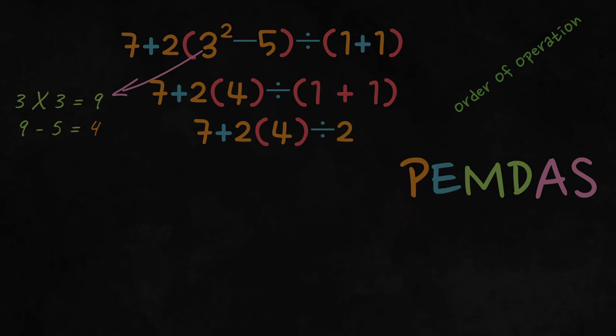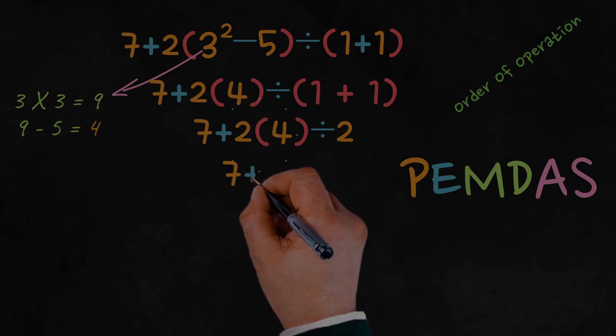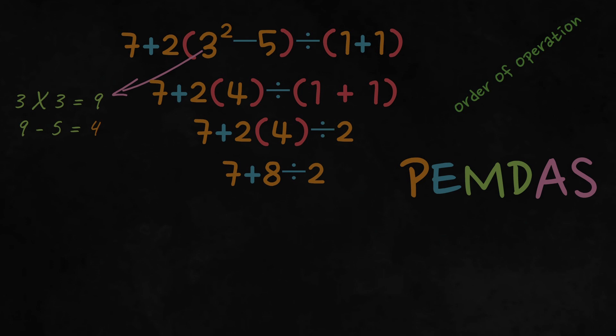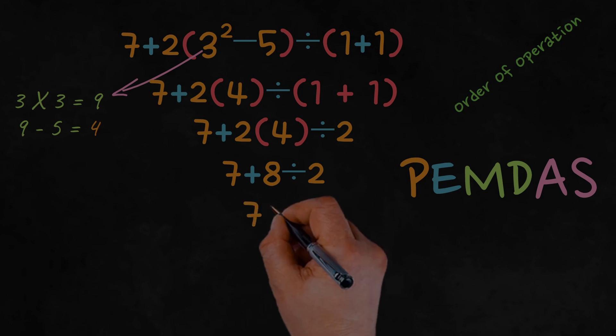Now, we handle the multiplication and division from left to right. First, we calculate 2 times 4, giving us 8. Next, we divide 8 by 2, resulting in 4. Our expression now looks like 7 plus 4.